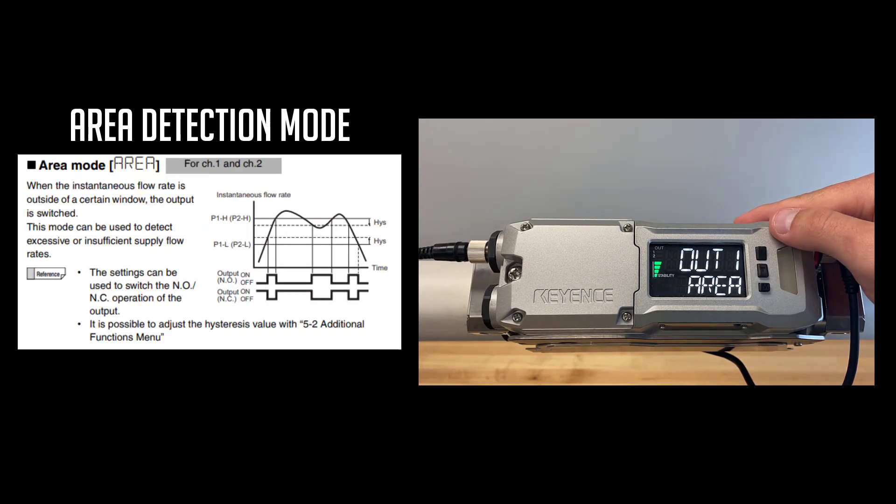In the area detection mode, you set a lower and upper limit of instantaneous flow rate, and when the liquid at the current flow rate is in between those values, the output will stay on.